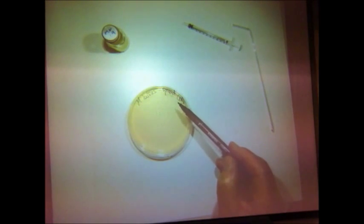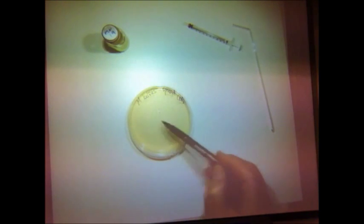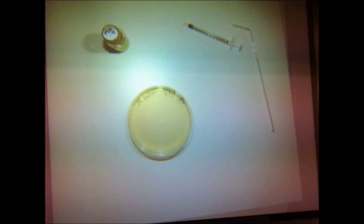It's always best when you're labeling plates to write around the edge. As you'll soon discover, if you write across the middle, it obscures the growth of the culture and you can't actually see the results.